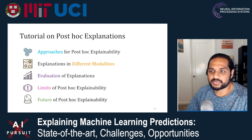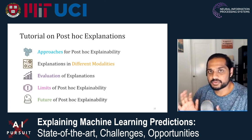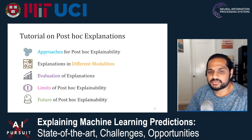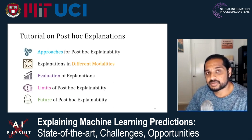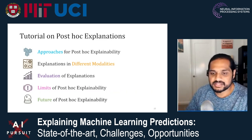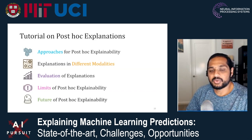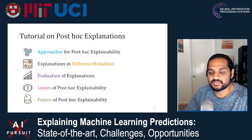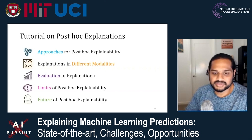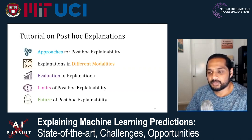That's a higher-level overview of what post-hoc explanations look like, why we use them, and the different ways to describe what they explain. For the rest of the tutorial, we'll focus on five sections: an overview of different approaches and examples, challenges from different data modalities such as images versus tabular versus text, how we evaluate these explanations, the limits of post-hoc explainability, and future research directions.